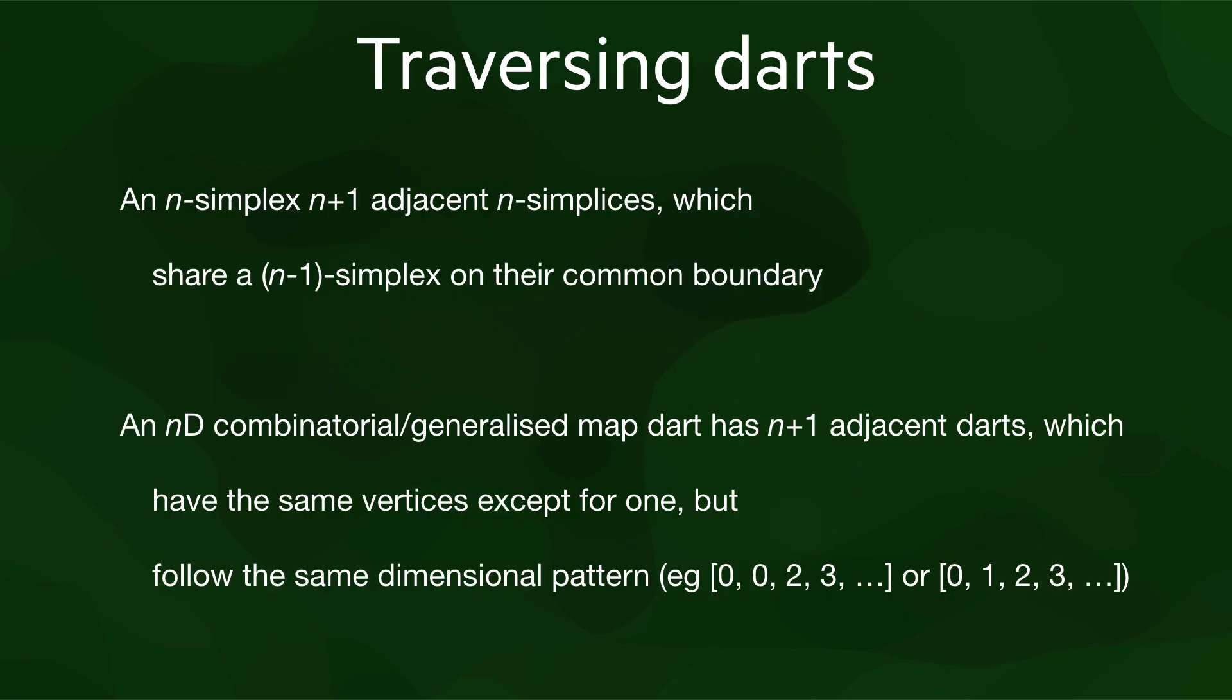Now, let's explain what are the relationships between darts, which are better understood in terms of simplices. An n-simplex has n plus 1 adjacent simplices, which share a common n minus 1 simplex on their boundary. In terms of darts, then we know that the dart in an n-d combinatorial or generalized map has n plus 1 adjacent darts.